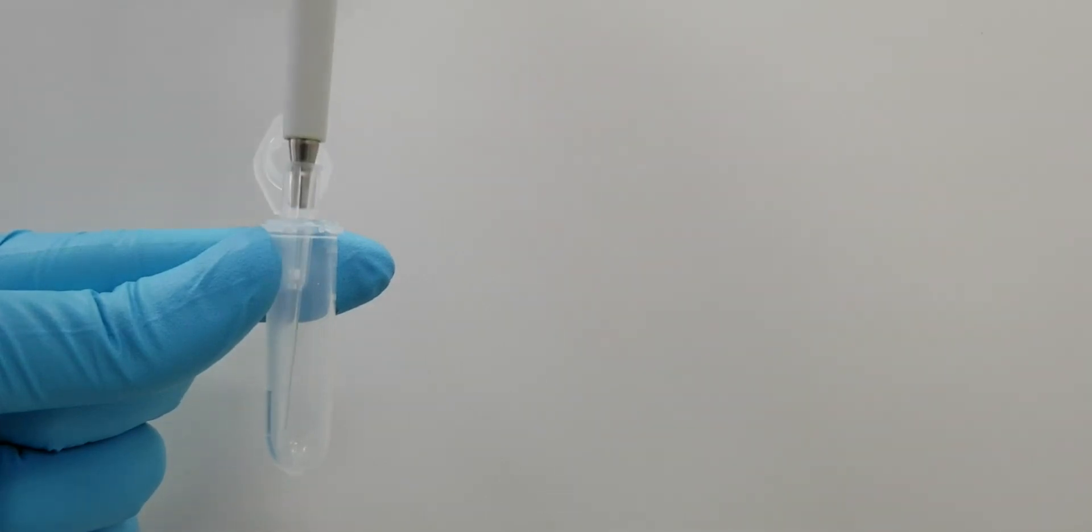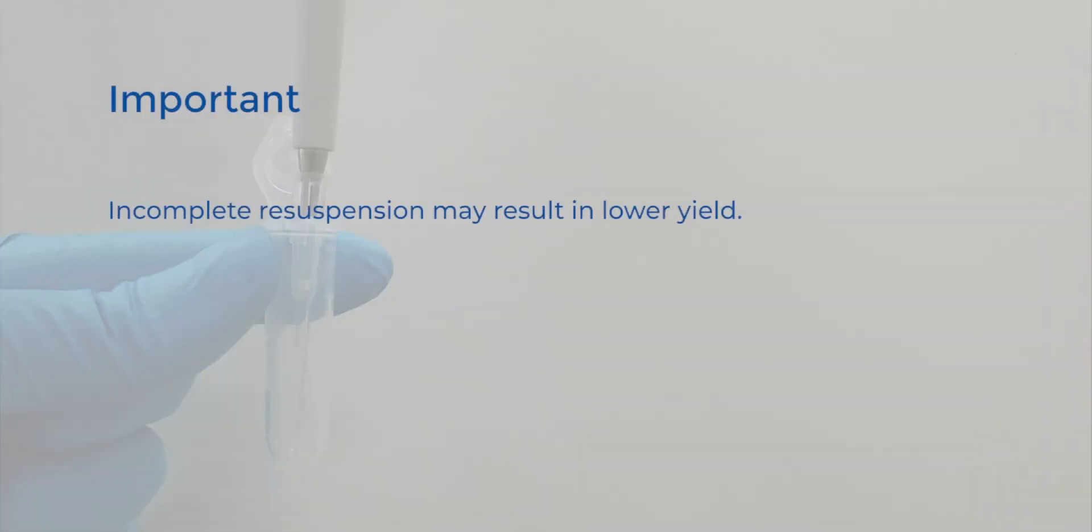Resuspend the pellet in at least 10 microliters of your buffer of choice. Pipette mix up and down at least 30 times to resuspend until the pellet is fully dissolved. Incomplete resuspension of the pellet at this step may result in lower RNA yield.